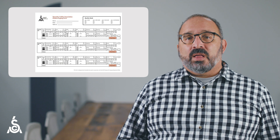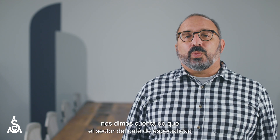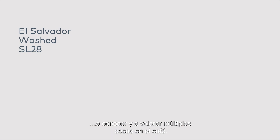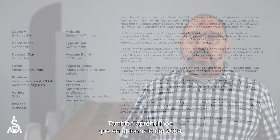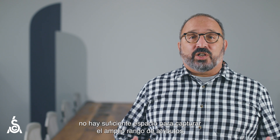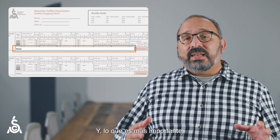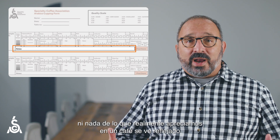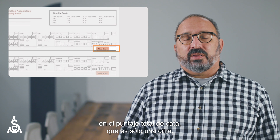In 2021, the SCA embarked on a project to evaluate and revise the 2004 cupping system, so we began our research. In our research, we learned that the specialty coffee industry had gone from knowing just a few things about a coffee to knowing and valuing many things about a coffee. We also learned that in the 2004 form, there just isn't enough space to capture the wider range of attributes, especially extrinsic or informational attributes that we value now. And even more importantly, none of that information — about how a coffee tastes, about who produced it and where — anything about what we really love and appreciate about a coffee gets reflected in that single number, the total cupping score.